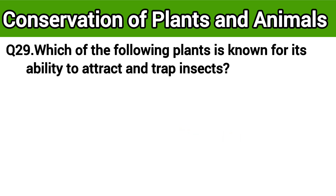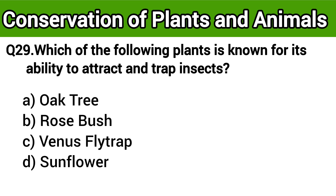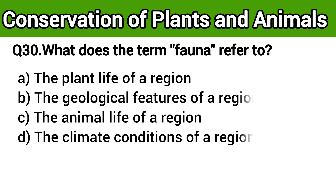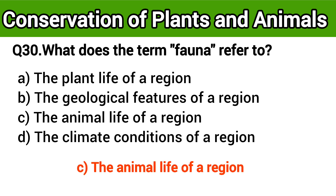Question number 29: Which of the following plants is known for its ability to attract and trap insects? The right answer is option C: Venus flytrap. Question number 30: What does the term fauna refer to? The right answer is option C: the animal life of a region.